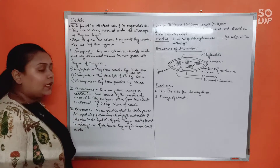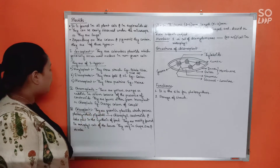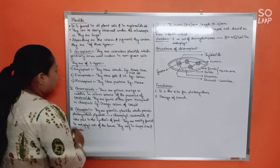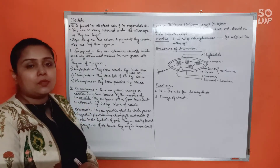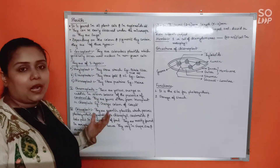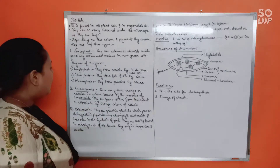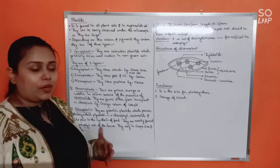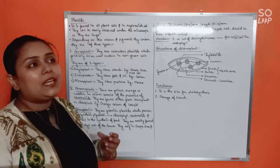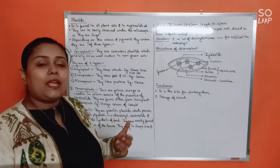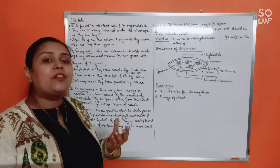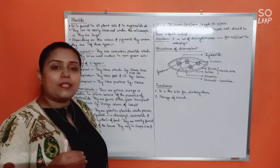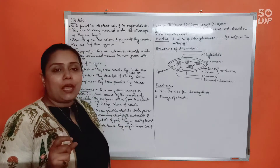The next type is chromoplast. These are yellow, orange, or reddish in color because of the presence of carotenoids - very important pigments that are yellow, orange, brown, or reddish. Chromoplasts are formed either from leucoplasts or chloroplasts. For example, unripe green tomatoes or chilies eventually become red or orange as they ripen.